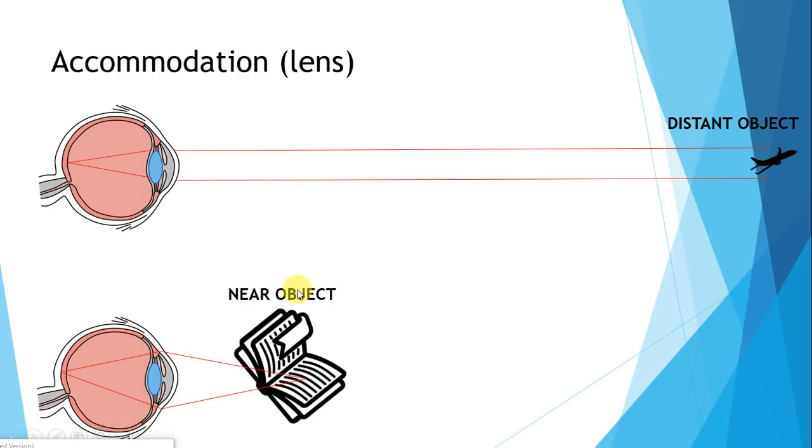Now let's imagine you're taking a look at something close up, for example, a book. The light rays coming out from a near object are actually divergent, meaning they're spreading out from the point they're coming from. Because the light rays are coming at a larger angle, to focus it on the back of the eye, it requires more convergence, basically more effort to focus those rays at the back of the eye.